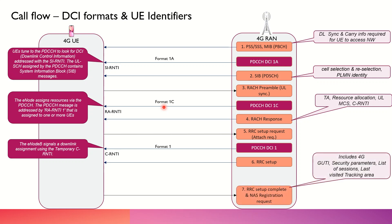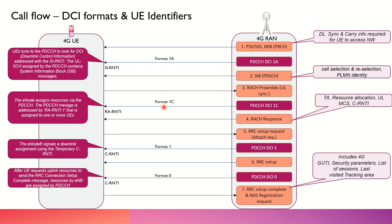Next is the RRC Setup Complete, and there would be a connection with the core network after that. But staying between the radio access network and the user equipment, at this stage there is another kind of DCI format — format 0 — which is being transferred from the base station to the UE. Once the UE requests the uplink resources to send the RRC connection complete message, resources will be assigned to the UE through this PDCCH.